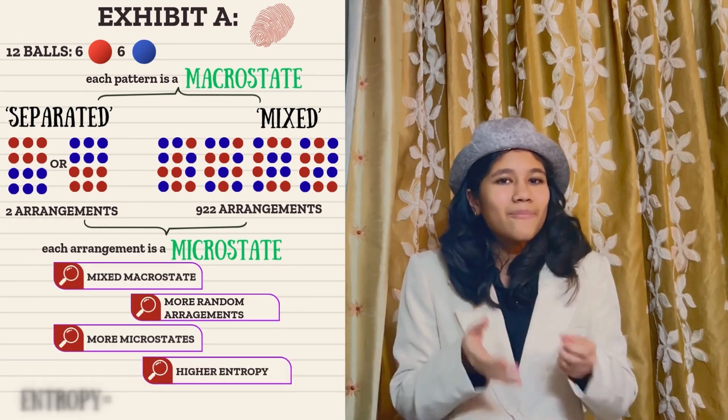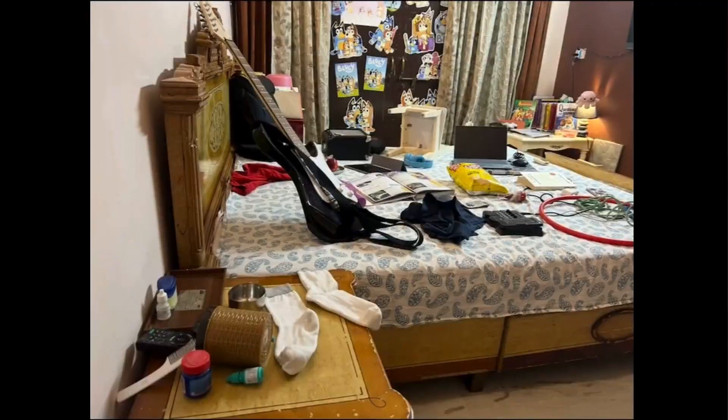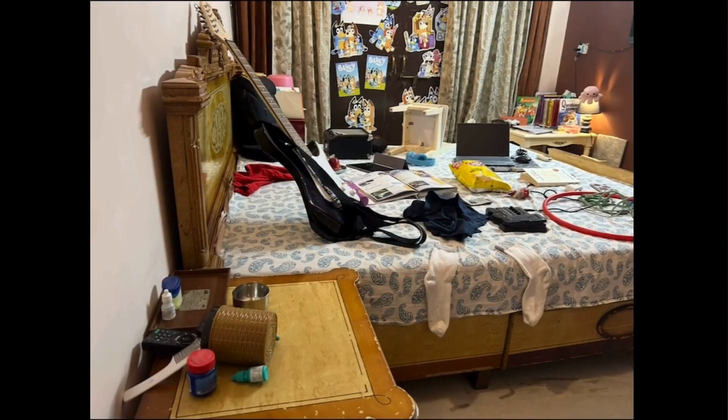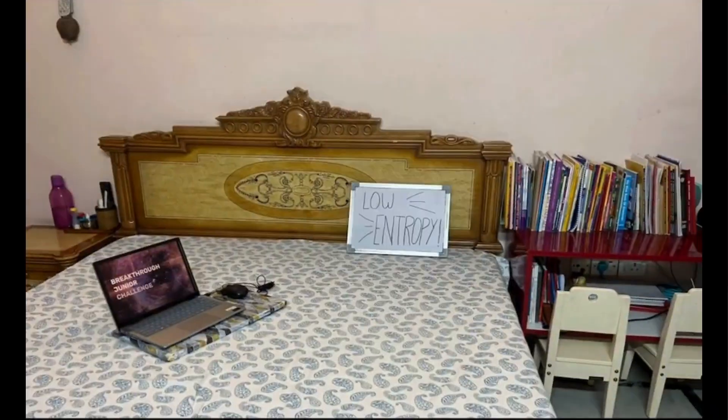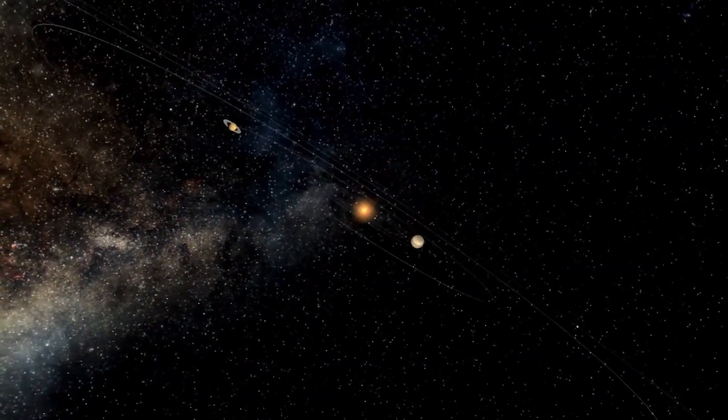So this means that entropy is simply the number of microstates. But how exactly does this relate to our room? Back to the crime scene. There are so many ways a room could be messy — socks in the desk, socks in the bed, socks under the bed. But there aren't as many ways a room could be clean. So that means a messy room has high entropy and a clean room has low entropy. And like the universe, closed systems always tend towards increasing entropy.